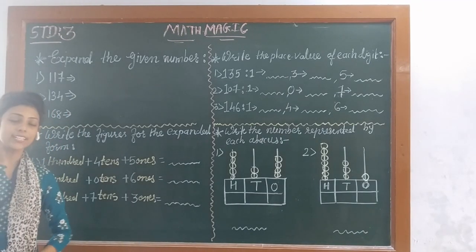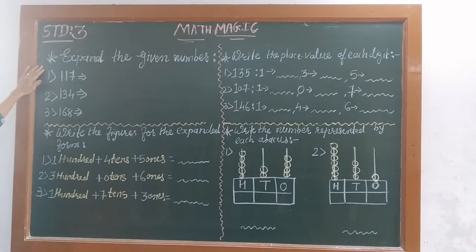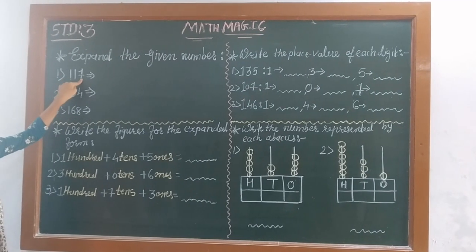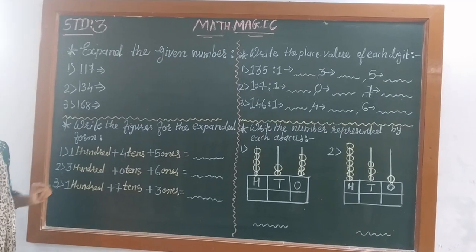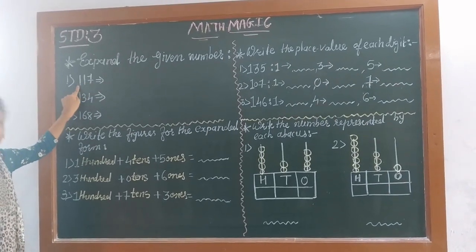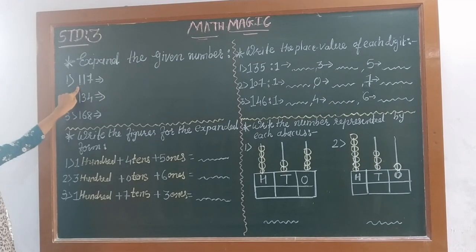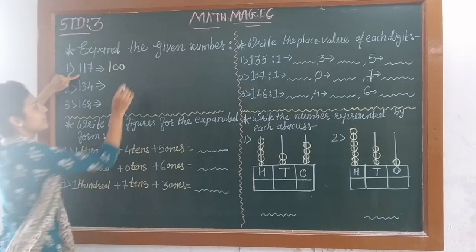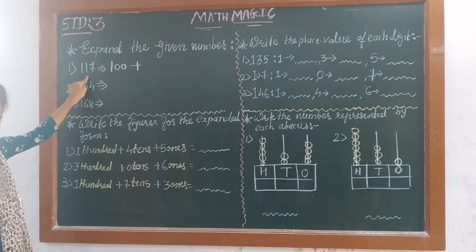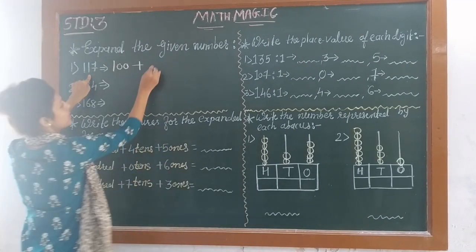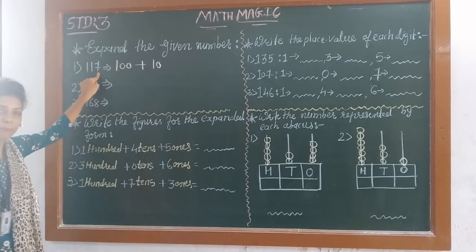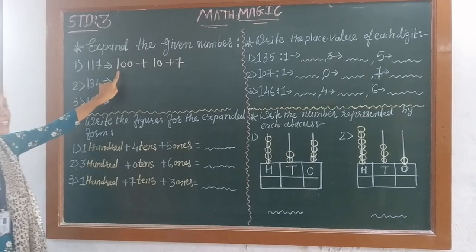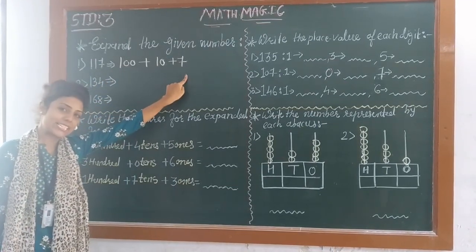Some examples are given here, so let's solve them. Number 1 — expand the given number 170. We will count from the right side: 1's place, 10's place, and 100's place. 1 is at 100's place, so it will be multiplied by 100 — we write 100. Then we write plus. 7 is at 10's place, so 7 multiplied by 10 is 70. And 0 is at 1's place, so 0 ones are 0. So the expanded form of 170 is 100 plus 70 plus 0.